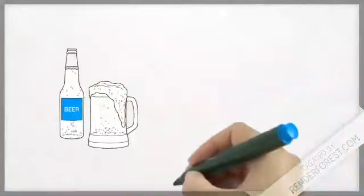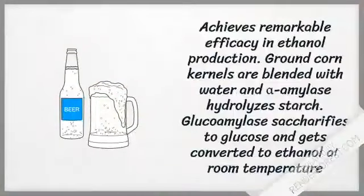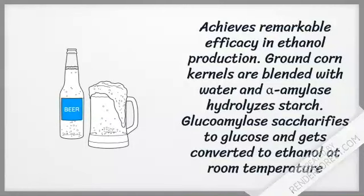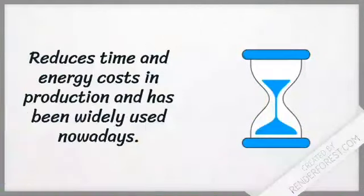Glucoamylase and alpha-amylase can work together to achieve remarkable efficacy in ethanol production. In this process, ground corn kernels are blended with water and alpha-amylase to hydrolyze starch into smaller sugar chains at 90 to 100 degrees Celsius. These fragments are then saccharified to glucose by glucoamylase at 50 to 60 degrees, and the resulting glucose is converted to ethanol at room temperature. The existence of these two enzymes highly reduces time and energy costs in production.